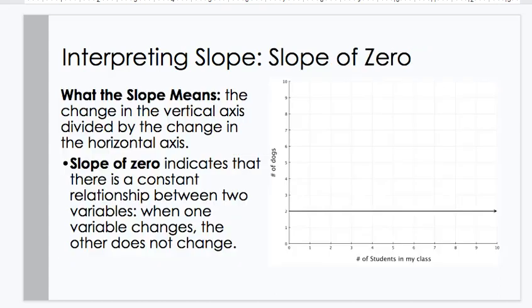Interpreting a slope. Zero. What the slope means? The change in the vertical axis divided by the change in the horizontal axis. So a slope of zero indicates that there is a constant relationship between two variables. When one variable changes, the other does not change at all.